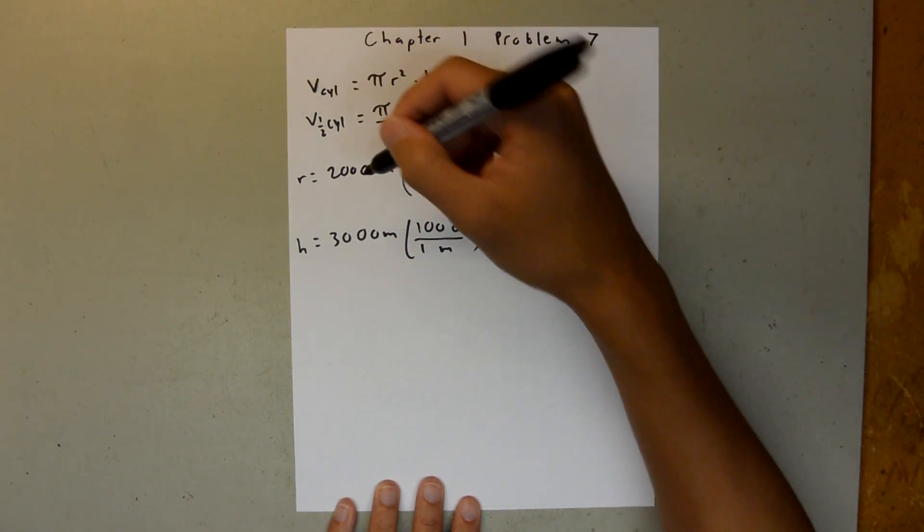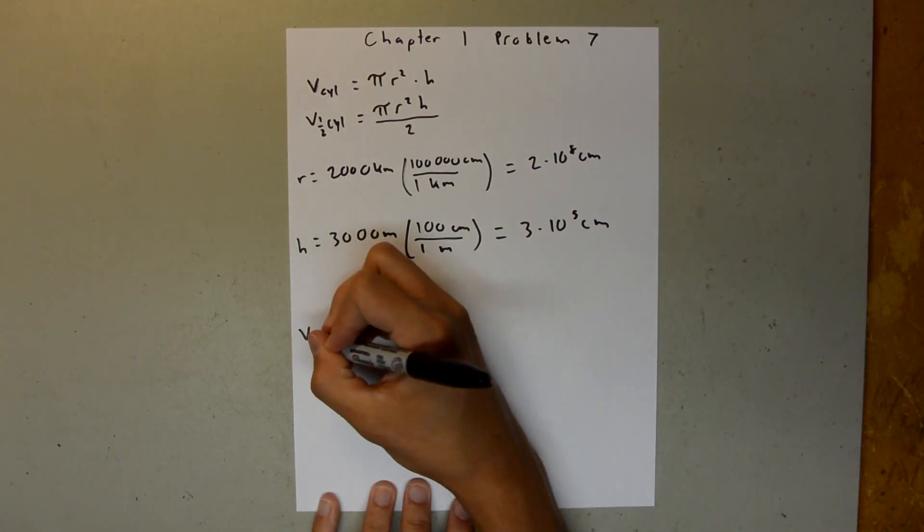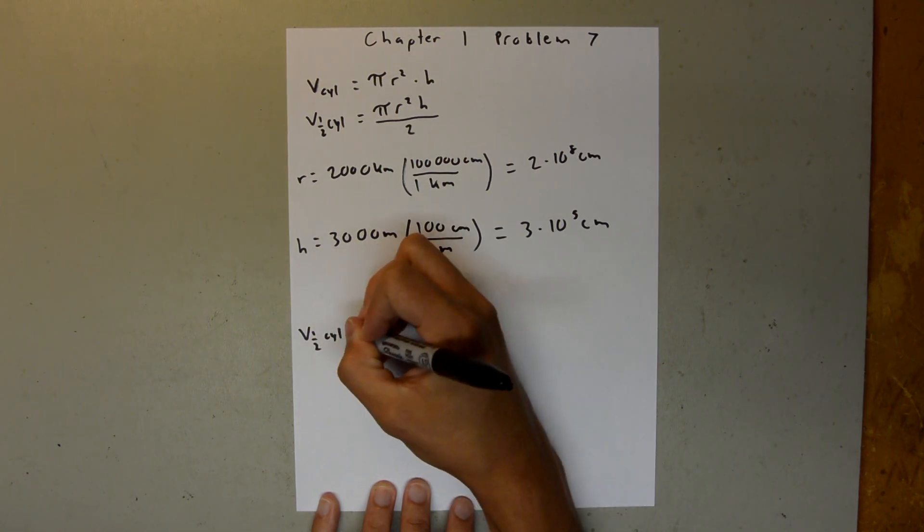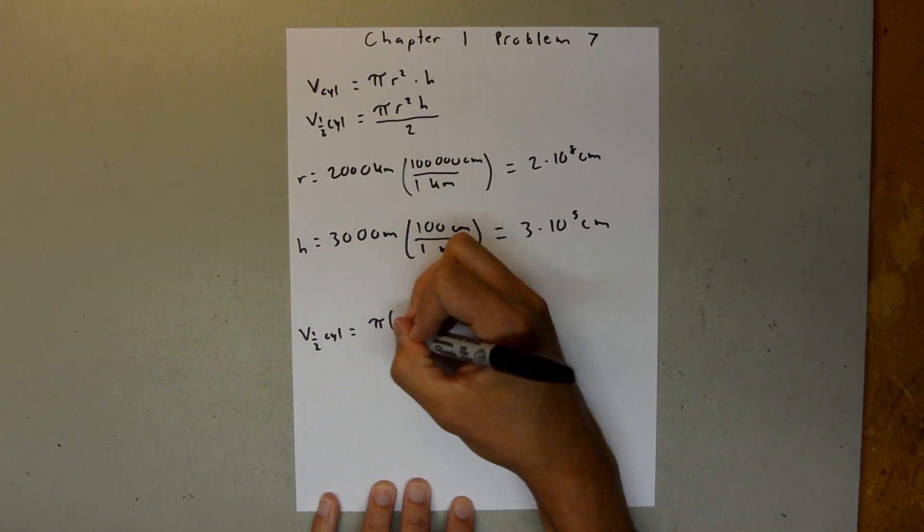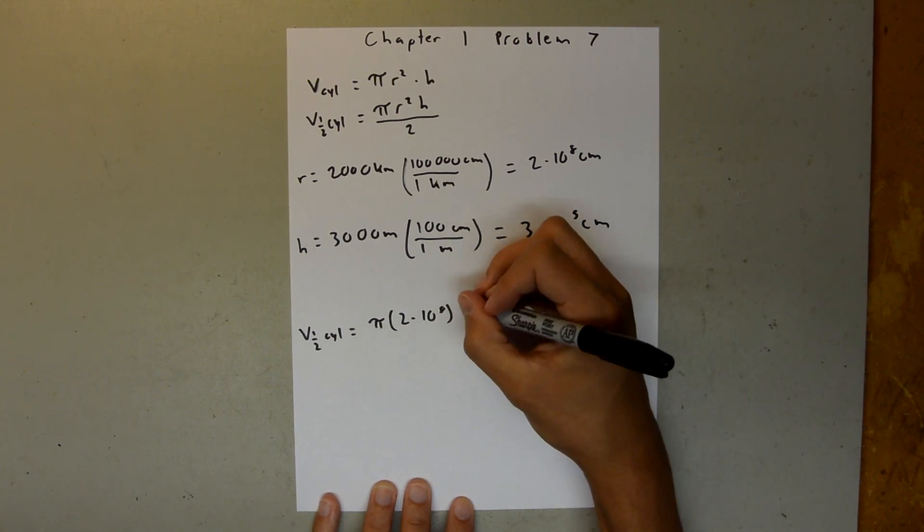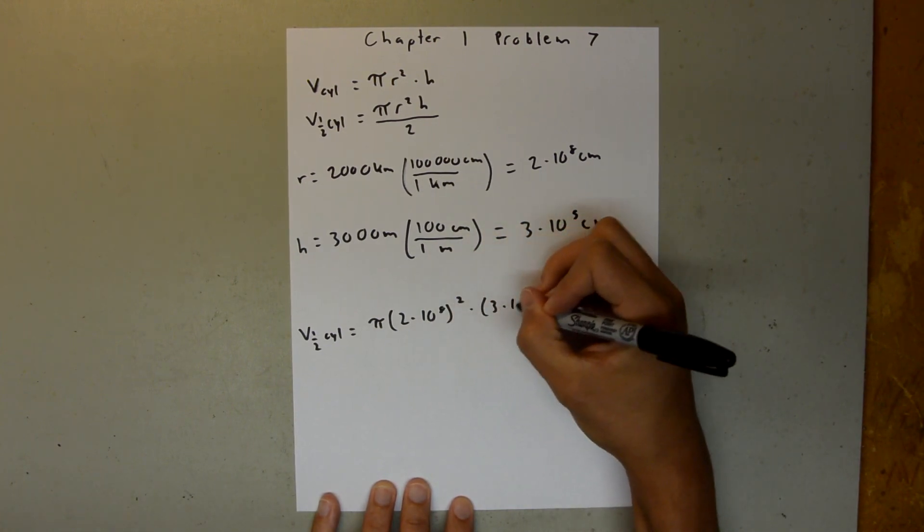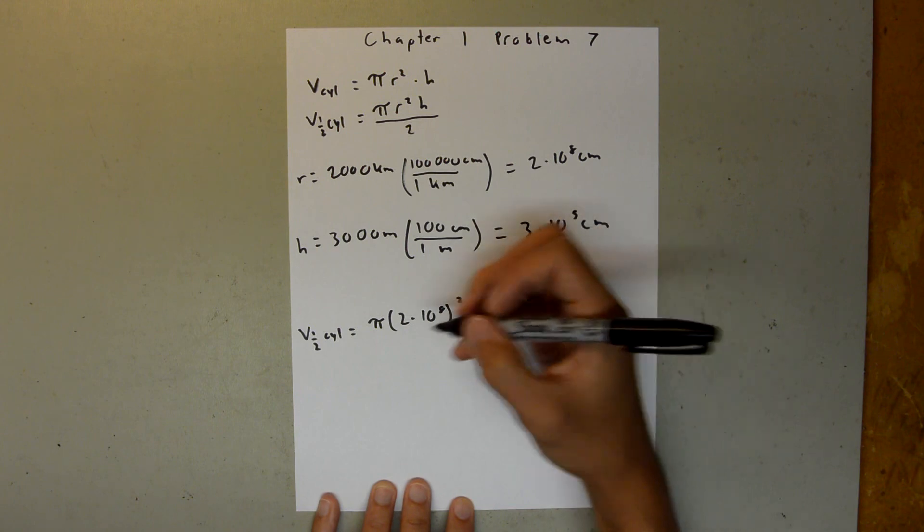Now we have our values that we can plug back into this equation. So, the volume of our half cylinder is equal to pi times 2 times 10 to the 8th squared times 3 times 10 to the 5th, all over 2.